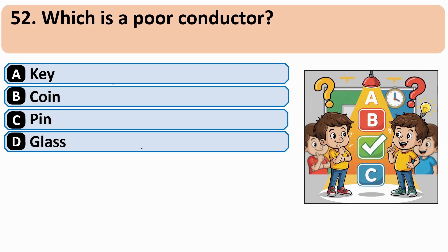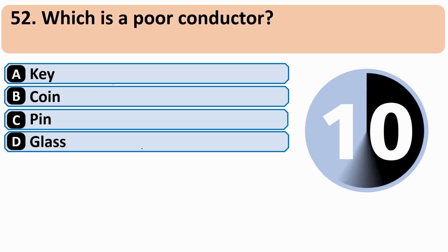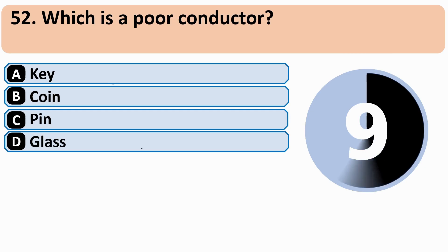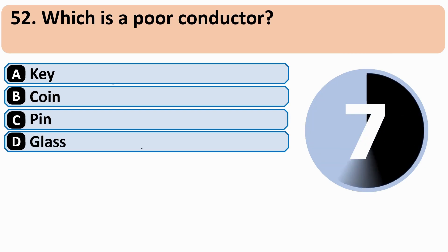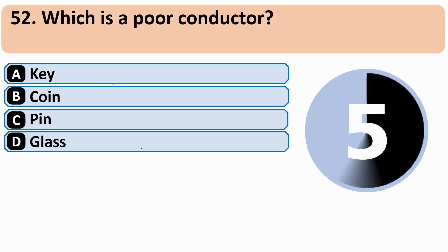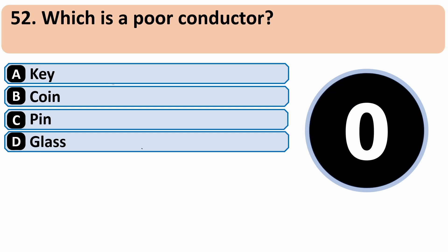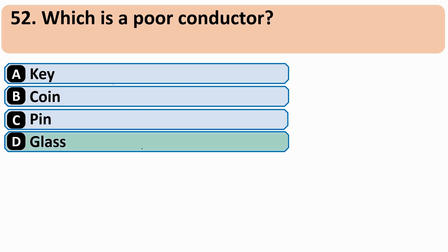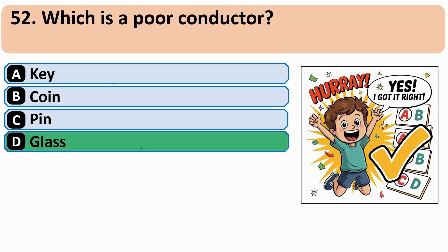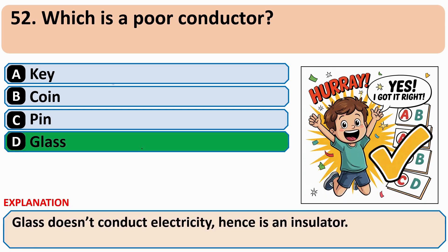Which is a poor conductor? The correct answer is D: Glass.